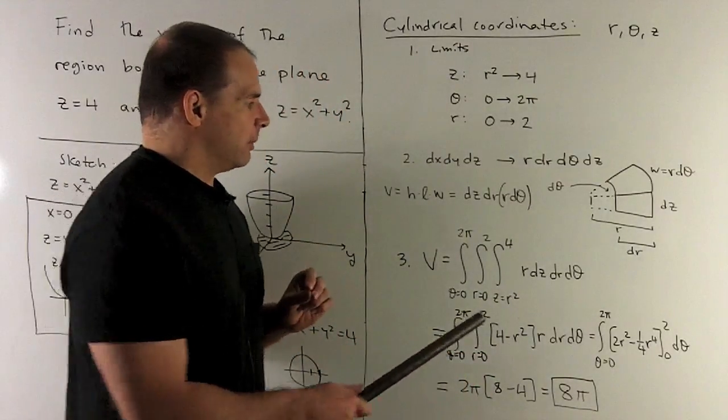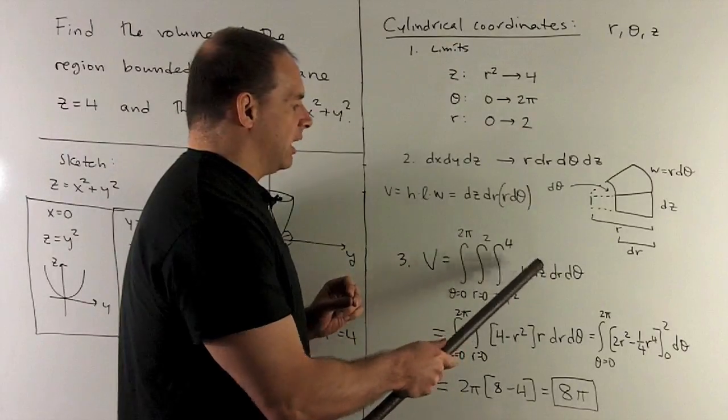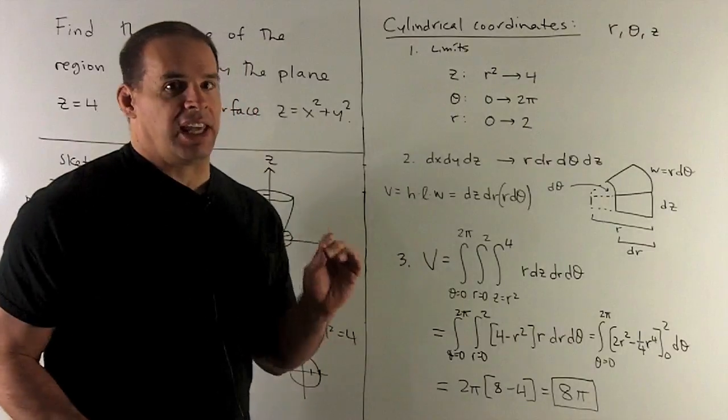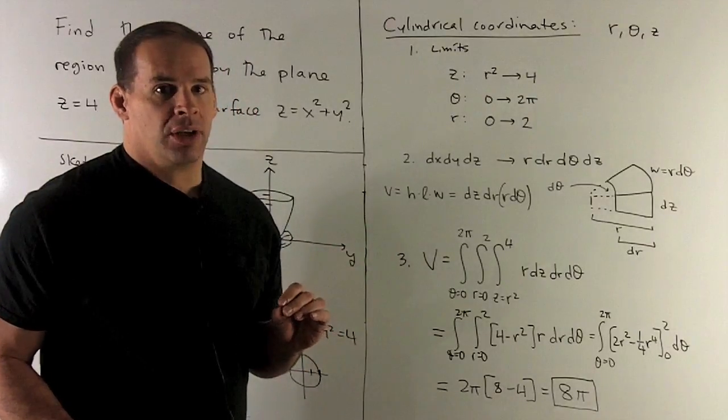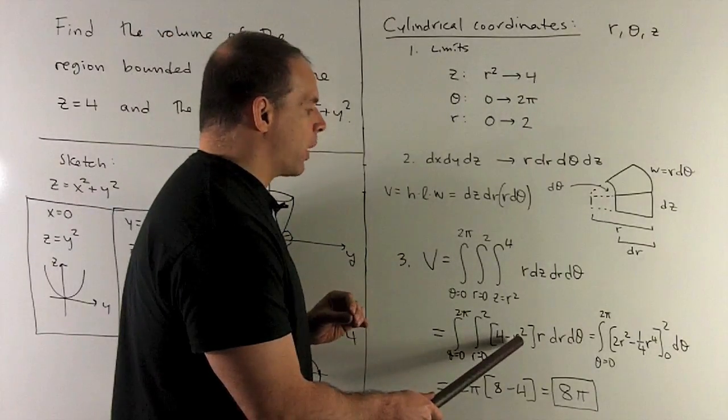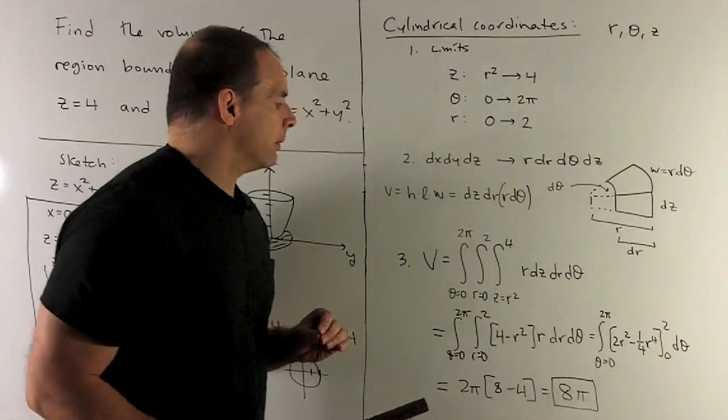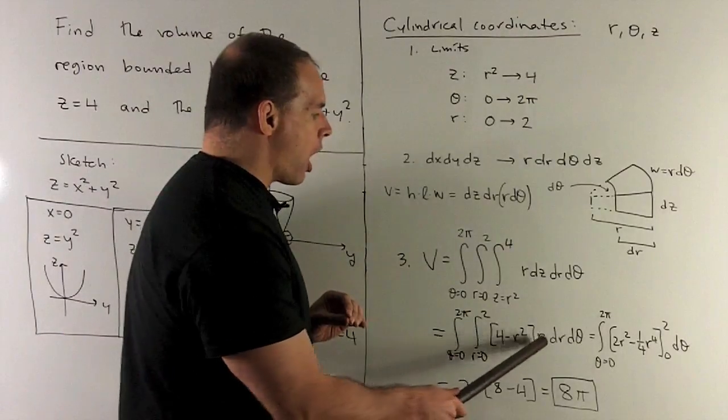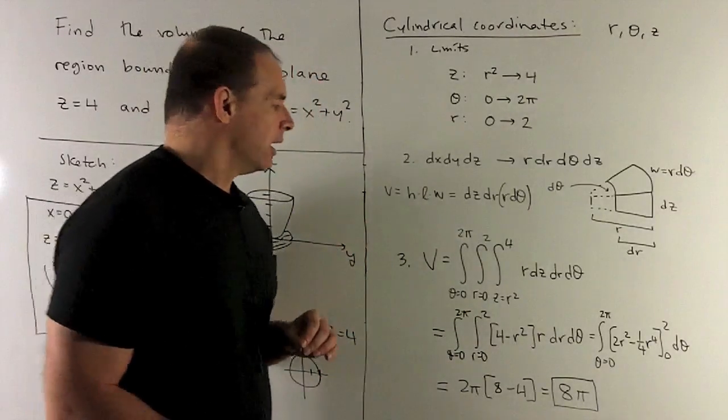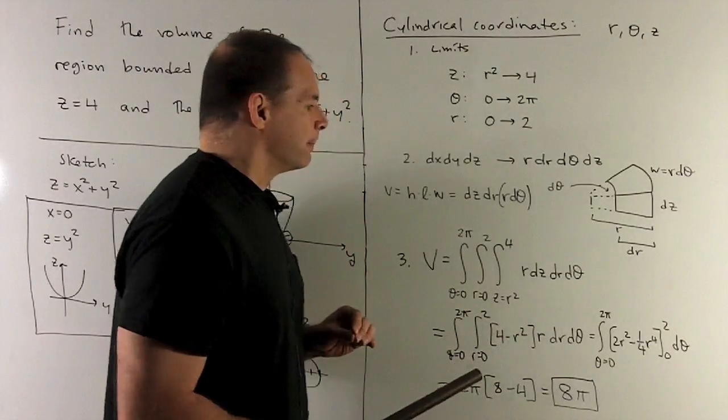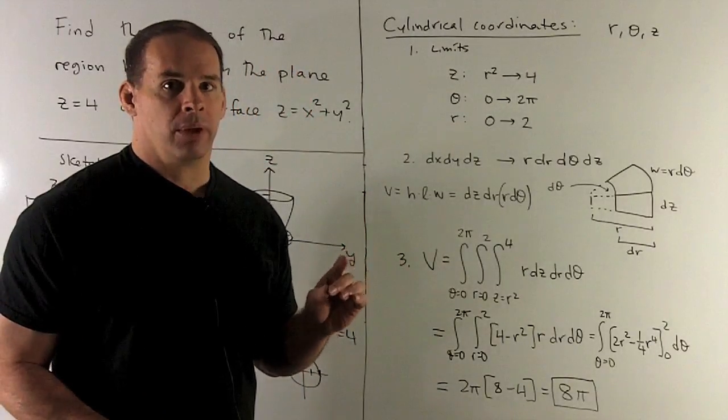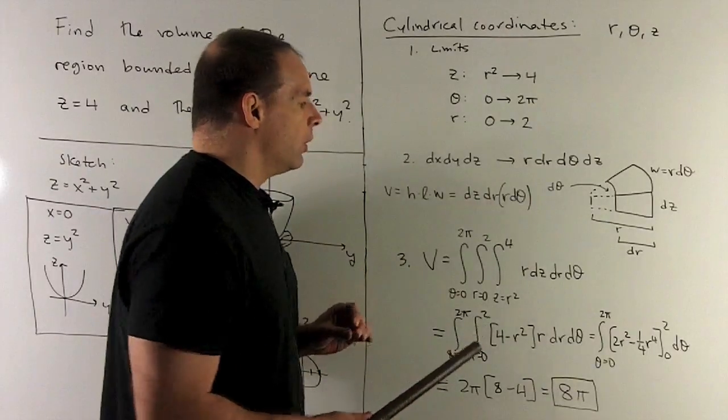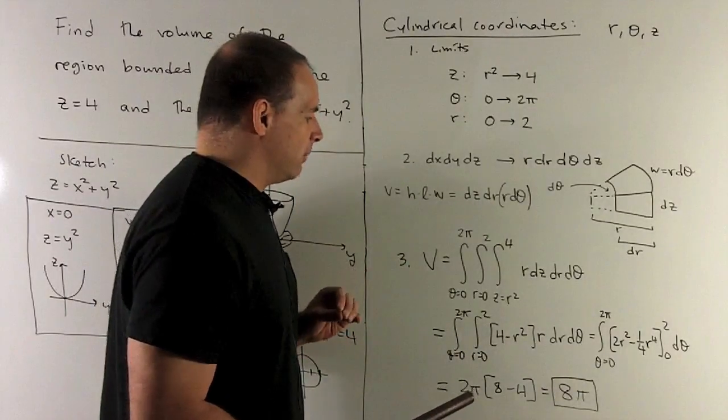So first up, it's going to be integrating dz with respect to z. So the r here is treated as a constant. So we just get z, and then we take the difference in the limits. So I have 4 minus r squared, and then we have the r from before. Next, we integrate with respect to r. So we have a 4r that goes to 2r squared, and then I have an r cubed. That's going to go to 1 fourth r of the fourth. And then there's just a difference. I put in my 0 and my 2. I take the difference. That's going to give me a 4.